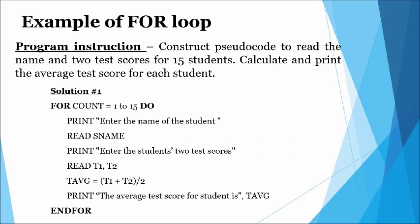Each time a student's detail is entered, the counter variable 'count' will be incremented by one until the total value 15 is reached. Once the total number of iterations is achieved, the keyword 'end for' is used to show the termination of the loop.